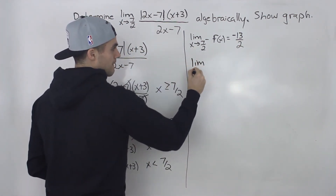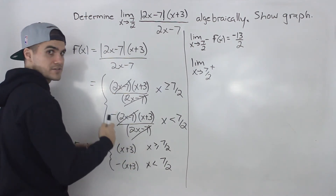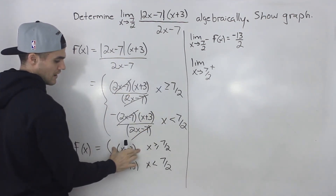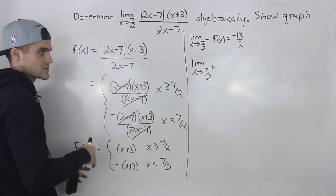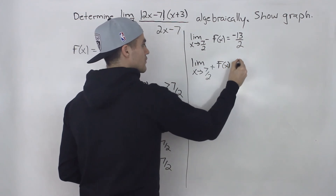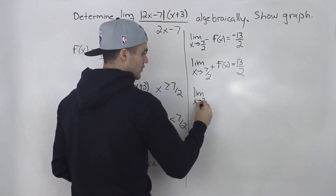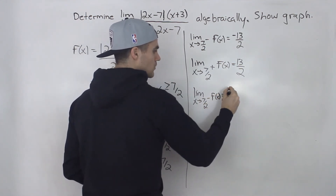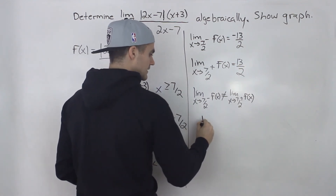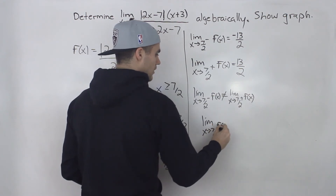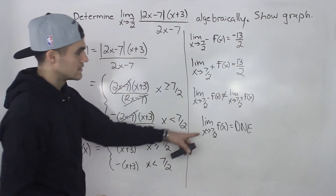The limit as x approaches 7 over 2 from the positive side uses the piece x plus 3. Plugging in 7 over 2 gives 3.5 plus 3, which equals positive 6.5 or positive 13 over 2. Since the left-sided limit, negative 13 over 2, does not equal the right-sided limit, positive 13 over 2, the limit as x approaches 7 over 2 does not exist.